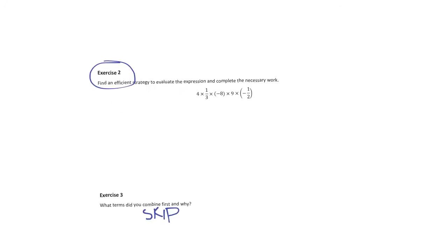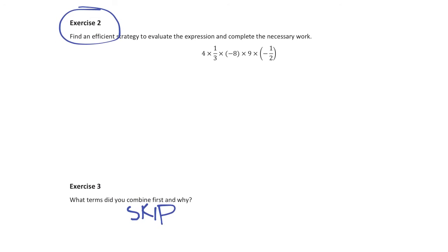On the second page, go to exercise 2. In this problem, everything is multiplication, so we're looking at what would be a good order to multiply these numbers. When I have the fraction 1/3, I want to see what numbers 3 would go into evenly. I can see the 9, so I would want to multiply 1/3 times 9 first because that's going to give me a whole number.